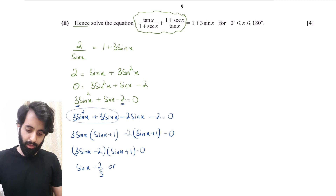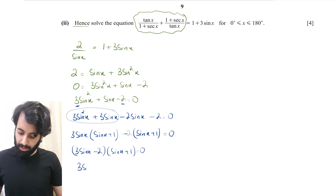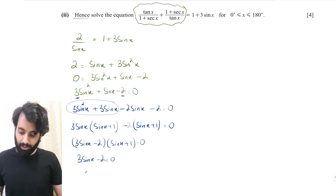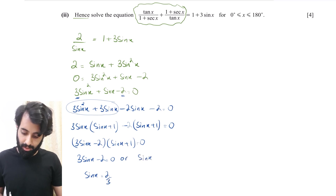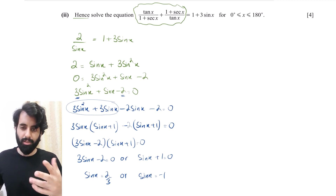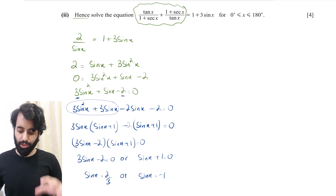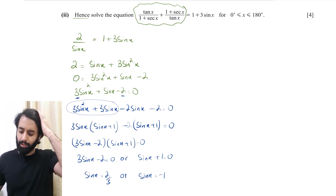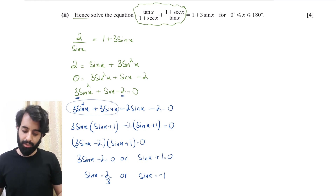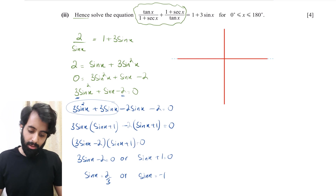From (3 sin x − 2) = 0 we get sin x = 2/3, and from (sin x + 1) = 0 we get sin x = −1. Values 0, 1, and −1 are critical values for trigonometric functions. For sin x = −1, rather than using a calculator, it's best to recall the shape of the sine graph. The range given is 0° to 180°, so we can't go beyond the second quadrant.